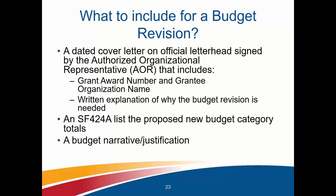What does the budget revision consist of? The following documents are required: a cover letter signed by your AOR — your authorized organizational representative — which should include your grant number, your grantee organization name, a written justification stating the need for the budget revision, an SF-424A listing the proposed new budget category totals, and a budget narrative or justification detailing the proposed charge allocations in each budget category. Once compiled, upload it into Grant Solutions as a grant amendment, and an email will be sent from Grant Solutions to your project officer for them to take necessary actions.